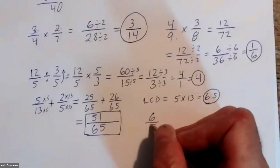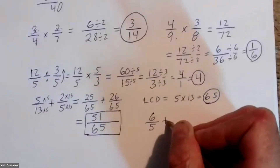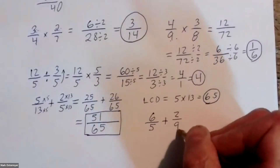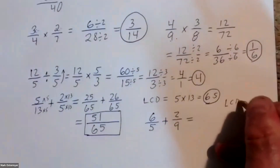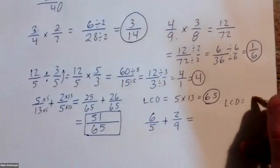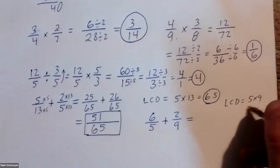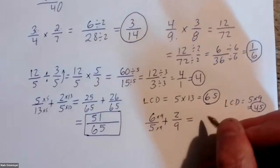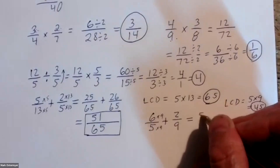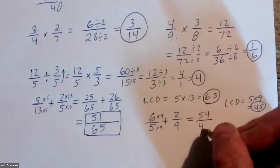Next one is six fifths added to two over nine. Six over five plus two over nine. We need a least common denominator of five and nine, which is five times nine, which is forty-five. This first fraction gets multiplied by nine over nine to give us six times nine is fifty-four over forty-five.